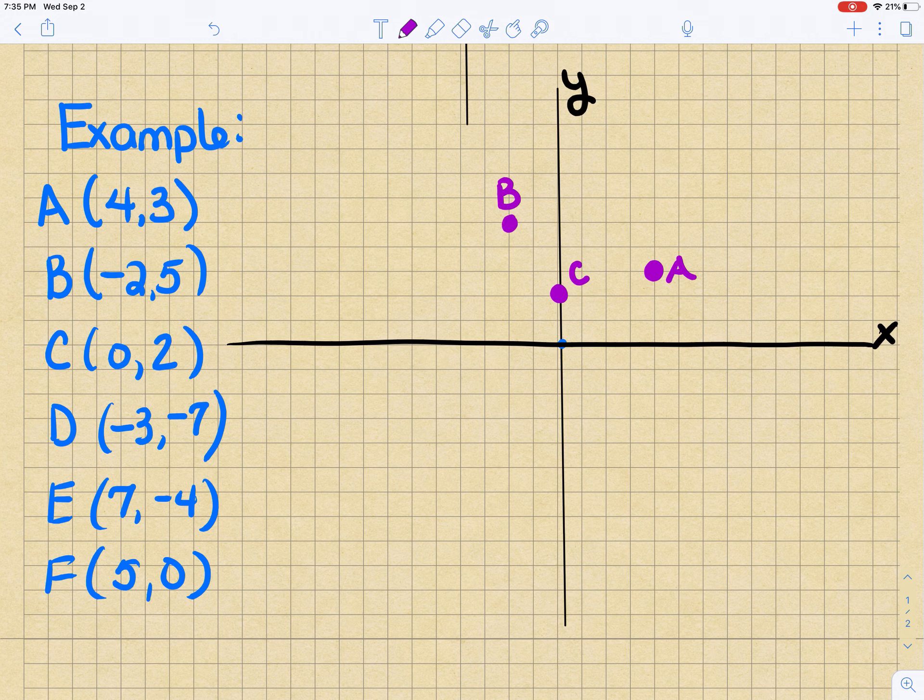D: we're moving both negative x and negative y, so we're going to move 3 to the left and then down 7. And that is D.